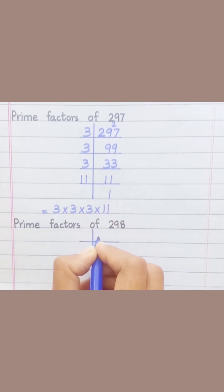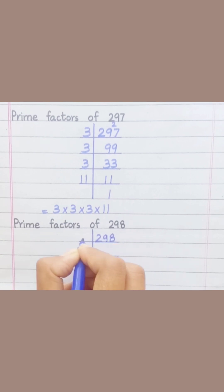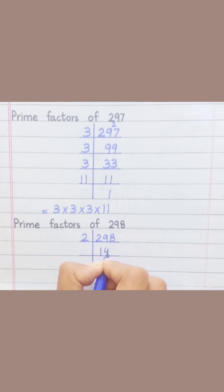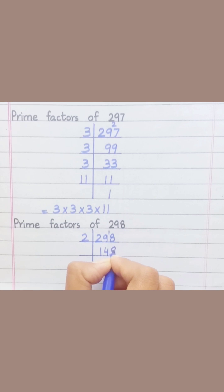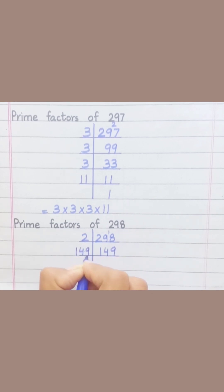Prime factors of 298. Two ones are two. Two fours are eight. Two nines are eighteen. One hundred forty-nine ones are one hundred forty-nine.